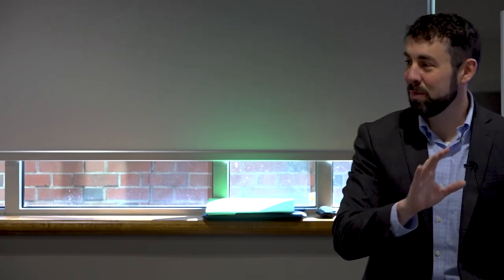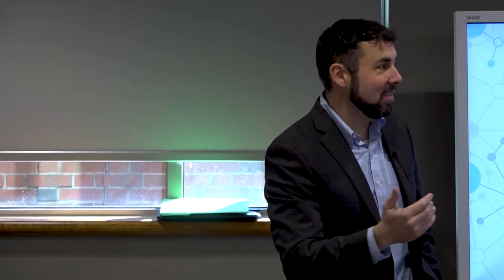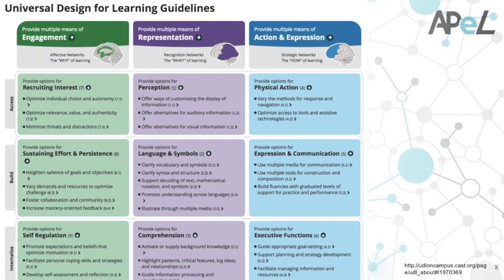The little brains in the diagram are there because this is built on neuroscience — the idea that different networks of the brain handle these different aspects of learning: engagement, representation, and expression, represented by green, purple, and blue. You can follow along as we head into this.